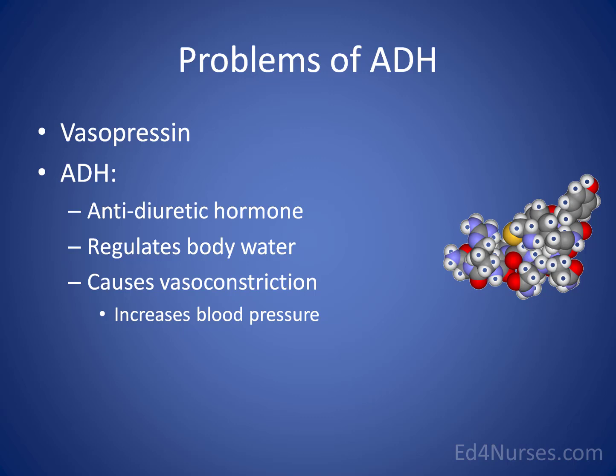The second thing ADH does is cause vasoconstriction. This is why we give vasopressin in a cardiac arrest situation — it has been added to ACLS standards because cardiac arrest patients often have a vasopressin deficiency. We give it for the vasoconstriction effect so that when the patient is resuscitated, they will hopefully develop a higher blood pressure.